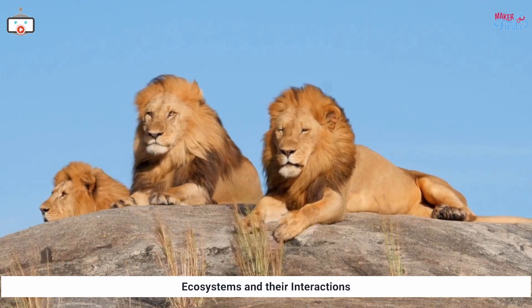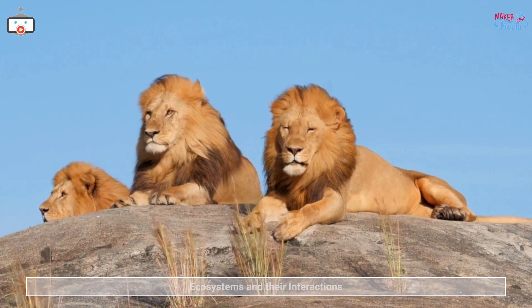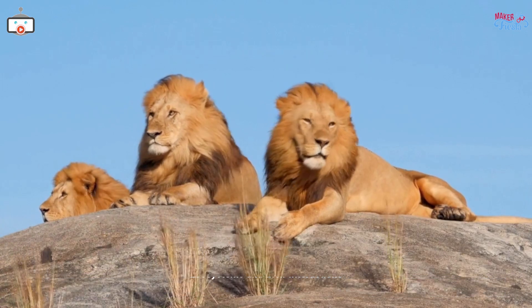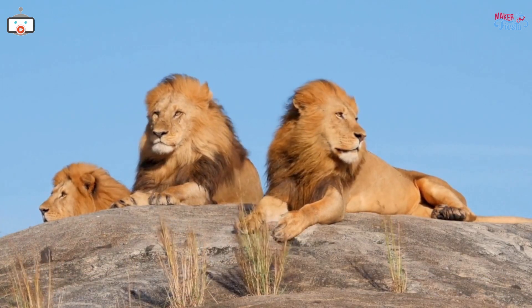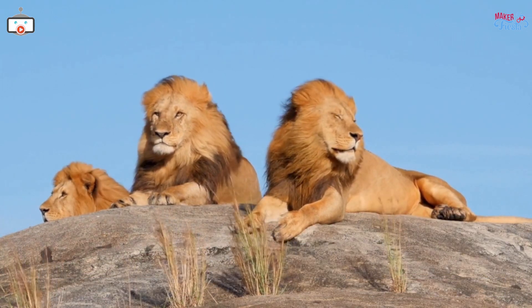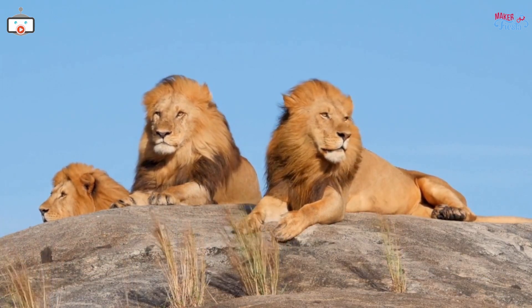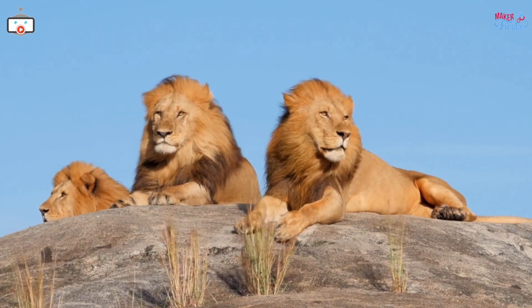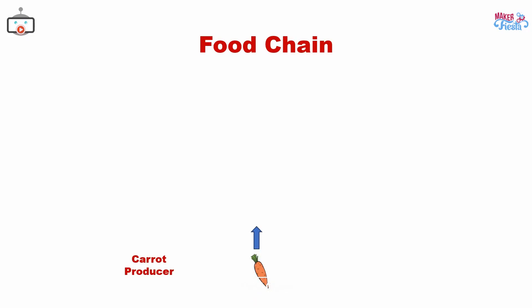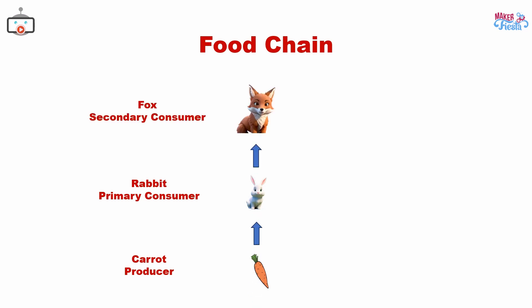Today, we are going to explore the fascinating world of ecosystems and their interactions. We will be focusing on food chains and food webs. A food chain is a simple representation of the feeding relationships between organisms in an ecosystem. It shows how energy and nutrients flow from one organism to another.